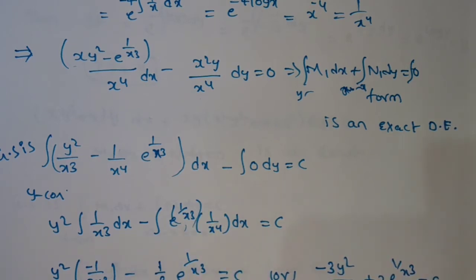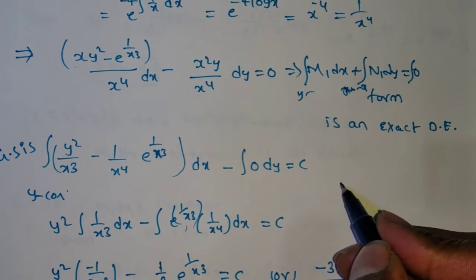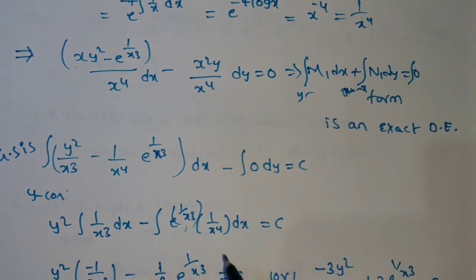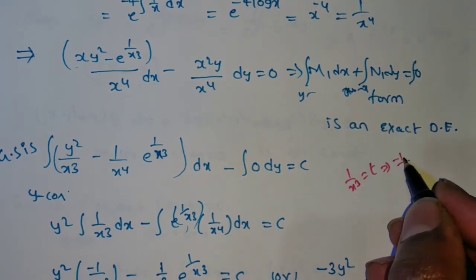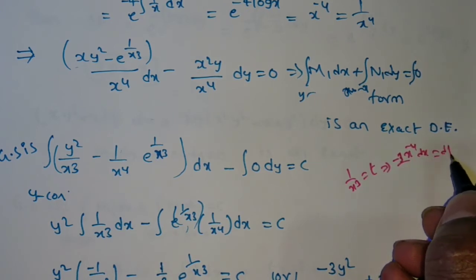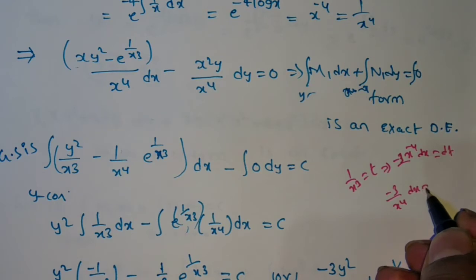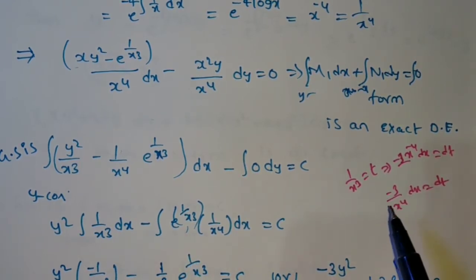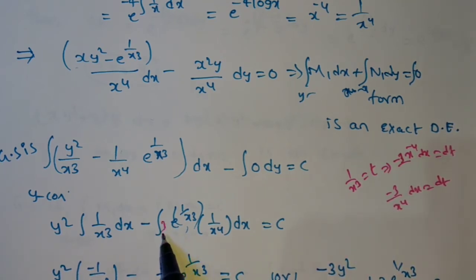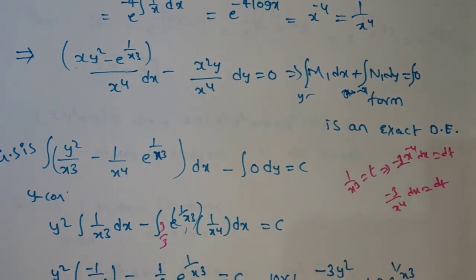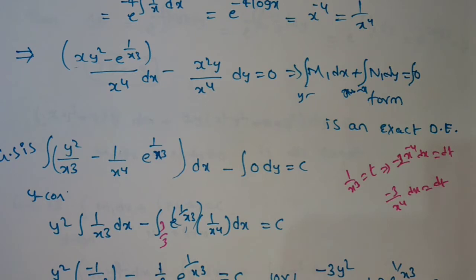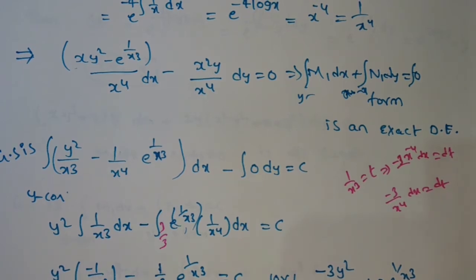For the integral of e^(1/x³) · (1/x⁴) dx, use substitution: let t = 1/x³, so dt = −3/x⁴ dx. Multiply and divide by 3 inside, and the integral becomes (1/3)e^t = (1/3)e^(1/x³). So the integration step gives y²/x³ and e^(1/x³)/3 terms.